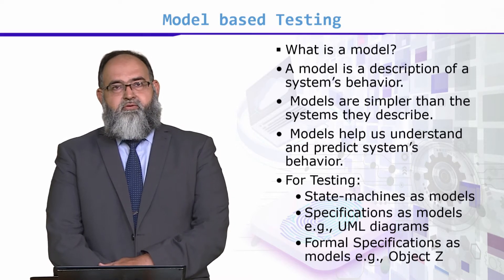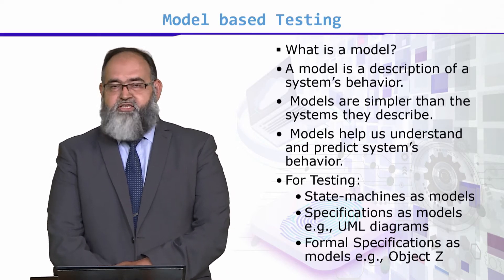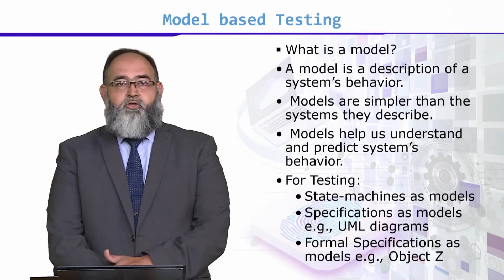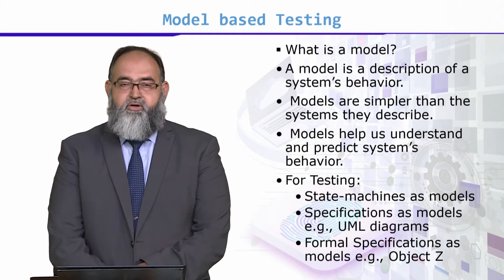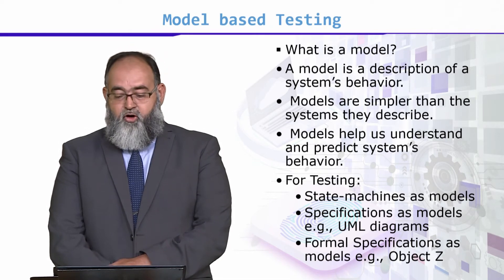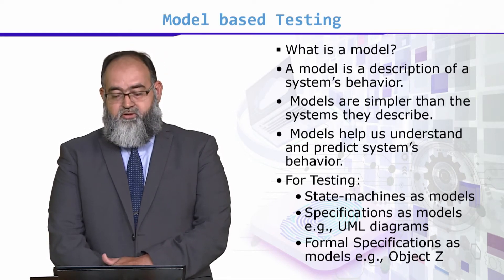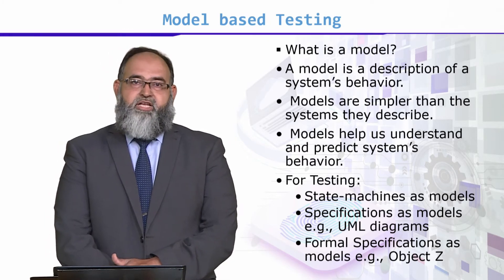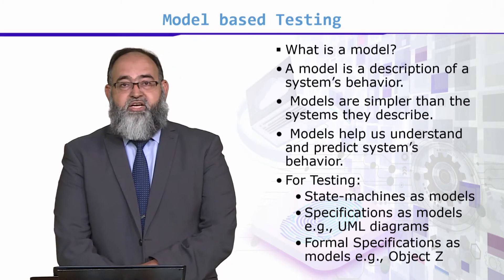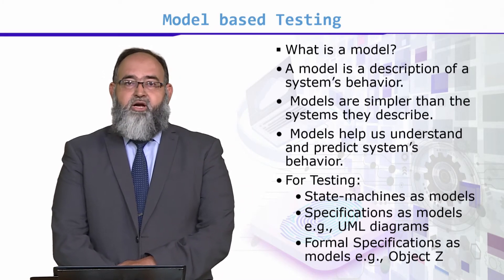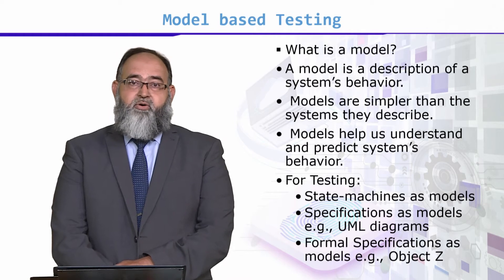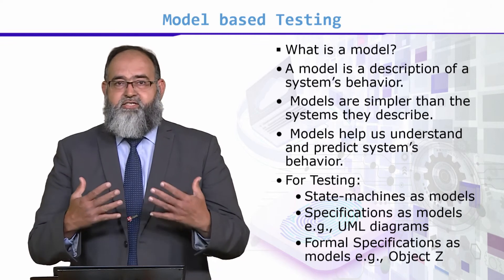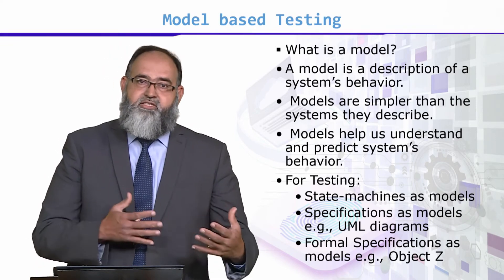We can have a model as a state machine. A state machine can be treated as a model. A specification can serve as a model. UML diagrams can represent a model. Formal specifications such as OBJ, Z, Object Z, and VDM are also forms of specification. These give us a kind of model on which we can think about and understand the behavior, and it is simpler than the system itself.